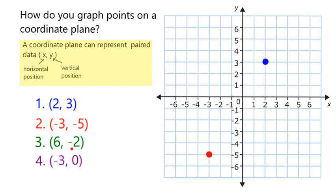For my third point, I start again at the origin. This time I go 6 in the positive direction, and then 1, 2 in the negative direction.